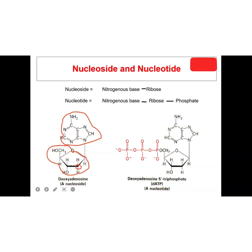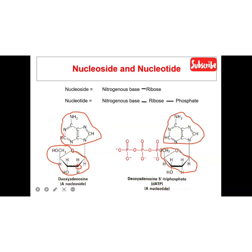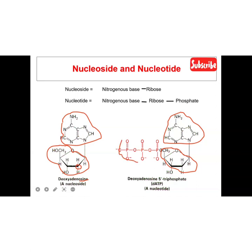For a nucleotide we have the deoxyribose, the nitrogenous base adenine, and the phosphate group. If adenine is found with ribose sugar it is called adenosine — ending in -osine. If it is guanine, it will be called guanosine, ending in O-S-I-N-E. That is one of the nomenclature rules for purines.